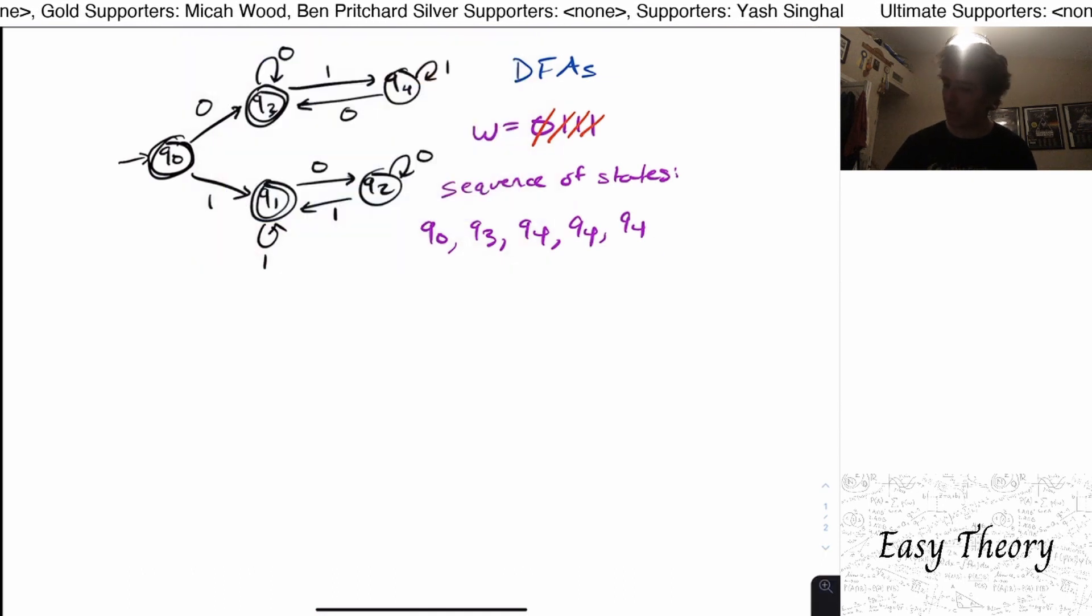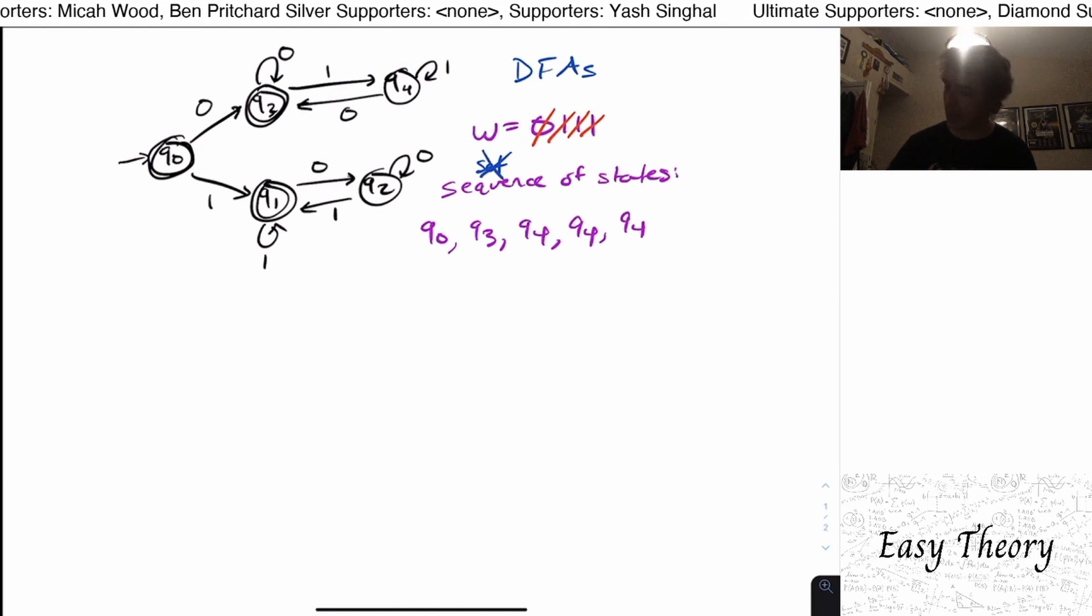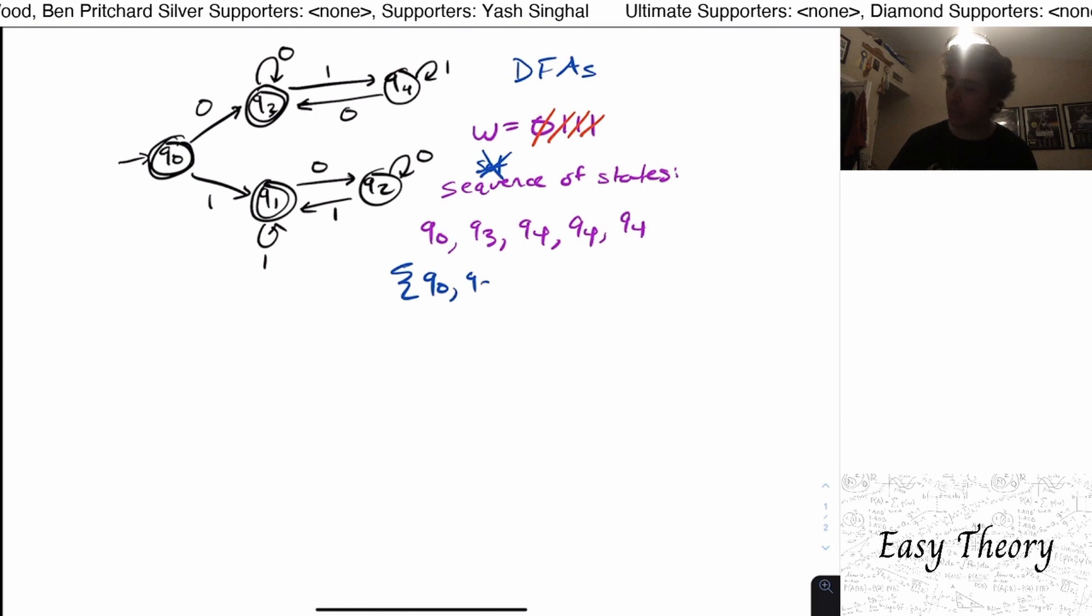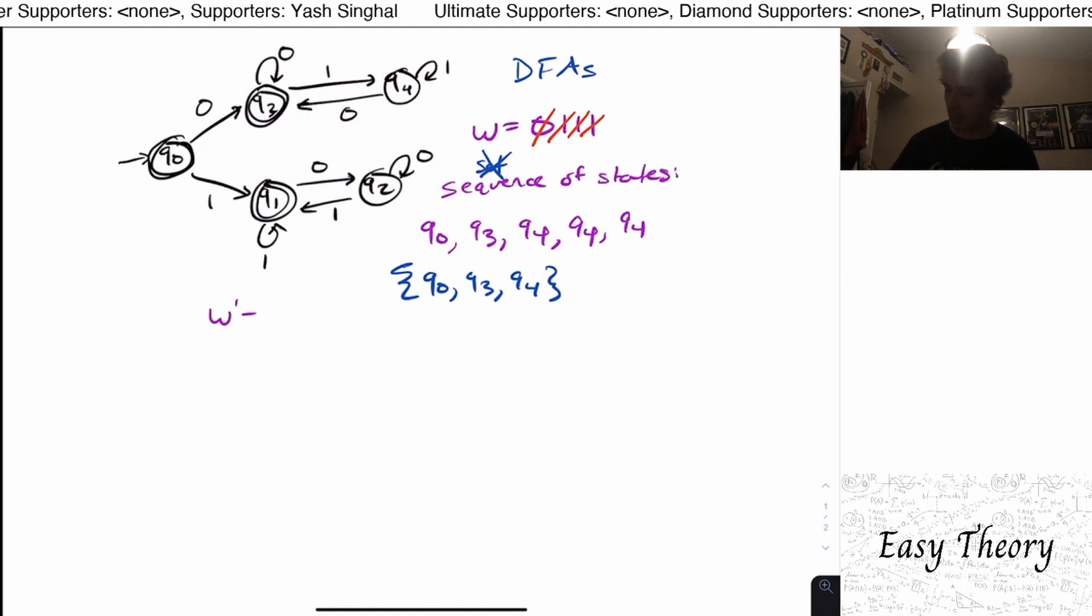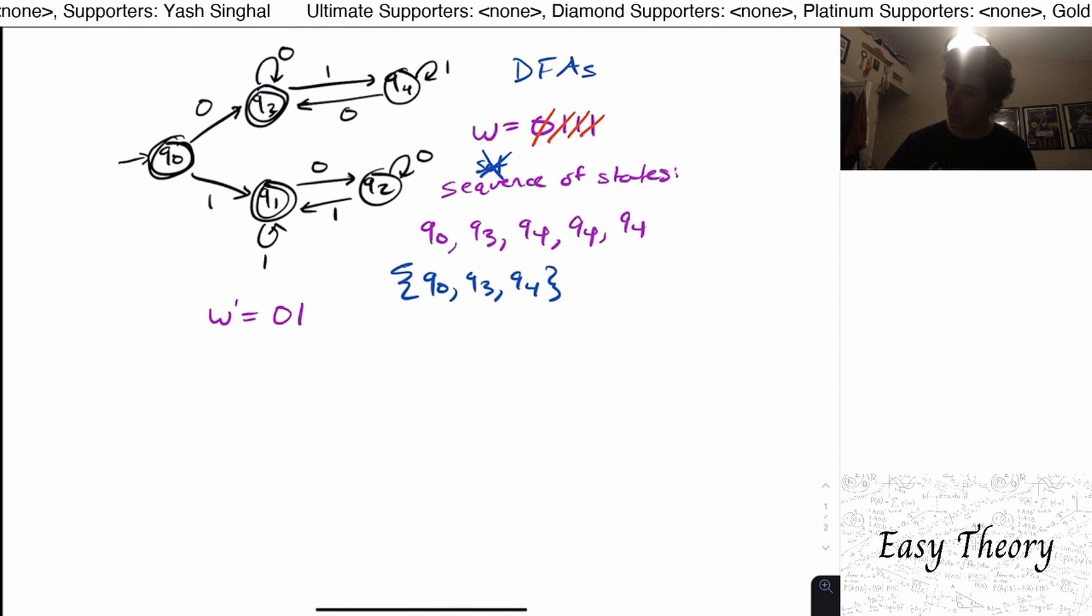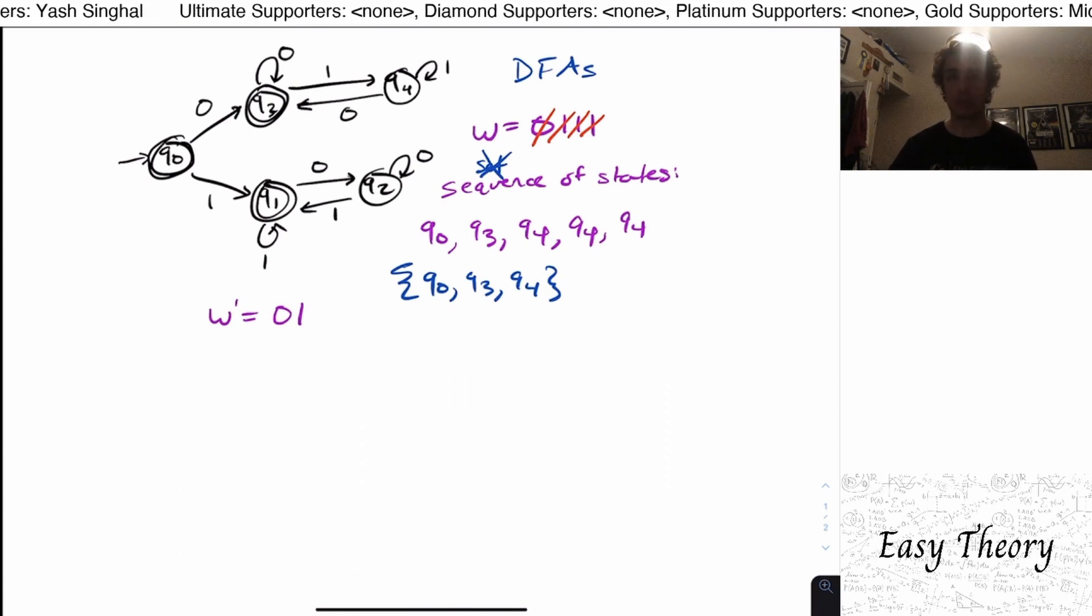So notice that I don't actually say set here, I don't say set of states. Why? Because if we did say set of states, then that would just be q0, q3, and q4. Well, then now look at the string w prime equal 01. Well, the sequence of states that I visit is q0, q3, q4, just like before.